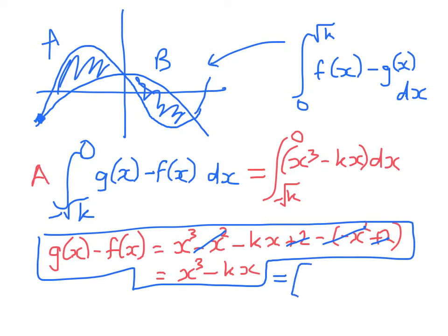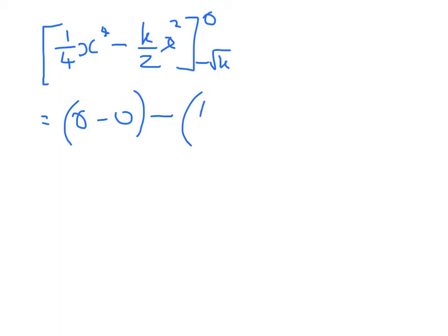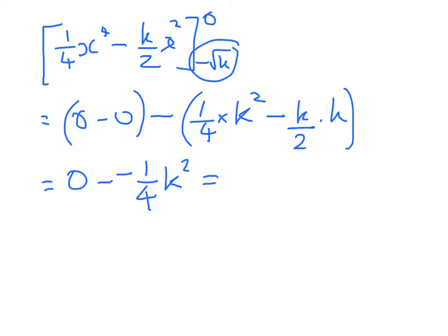The integral is (1/4)x⁴ - (k/2)x² from -√k to 0, which equals 0 - 0 minus [(1/4)k² - (k/2)k]. This works out to be 0 - (1/4 - 1/2)k², which is k²/4.